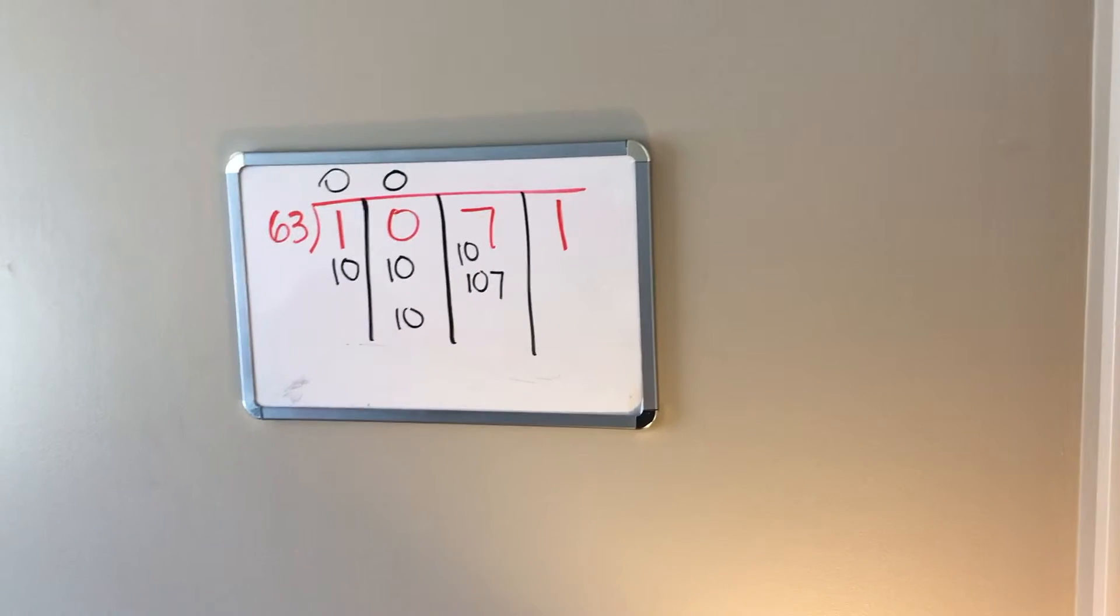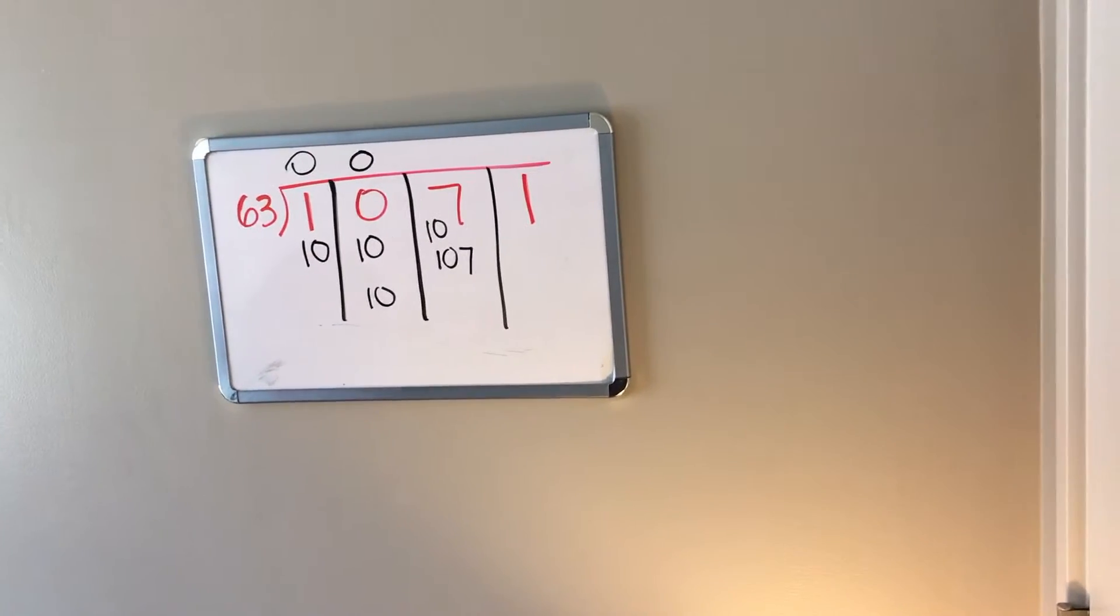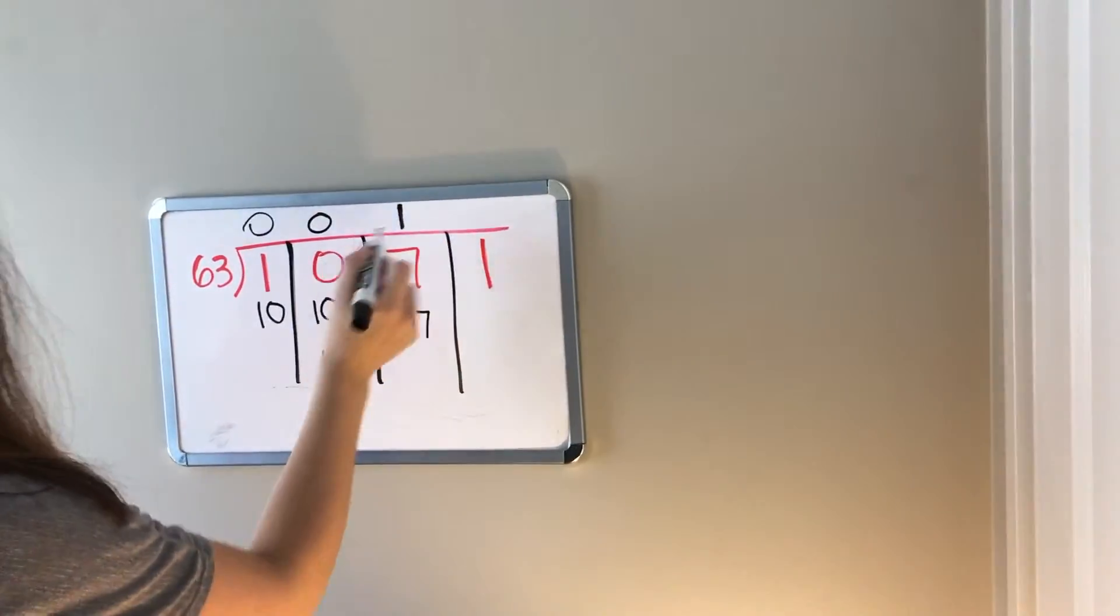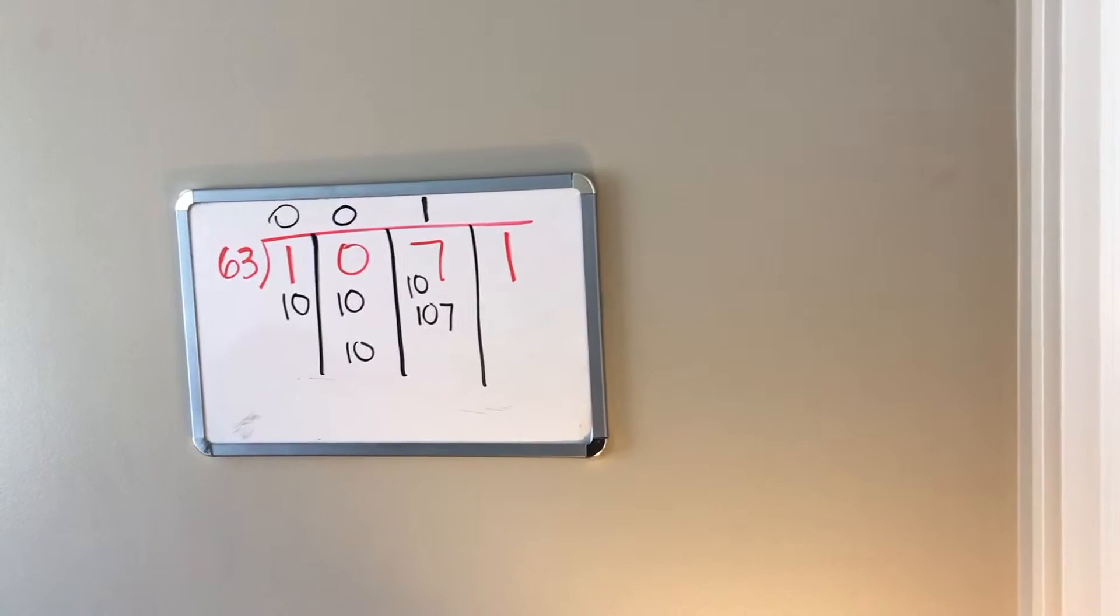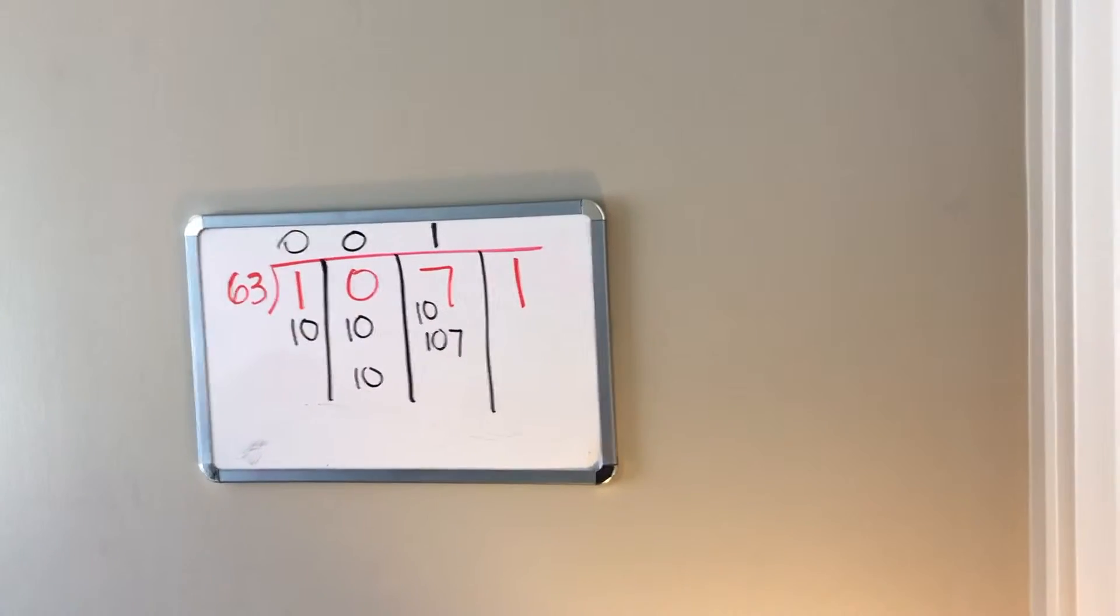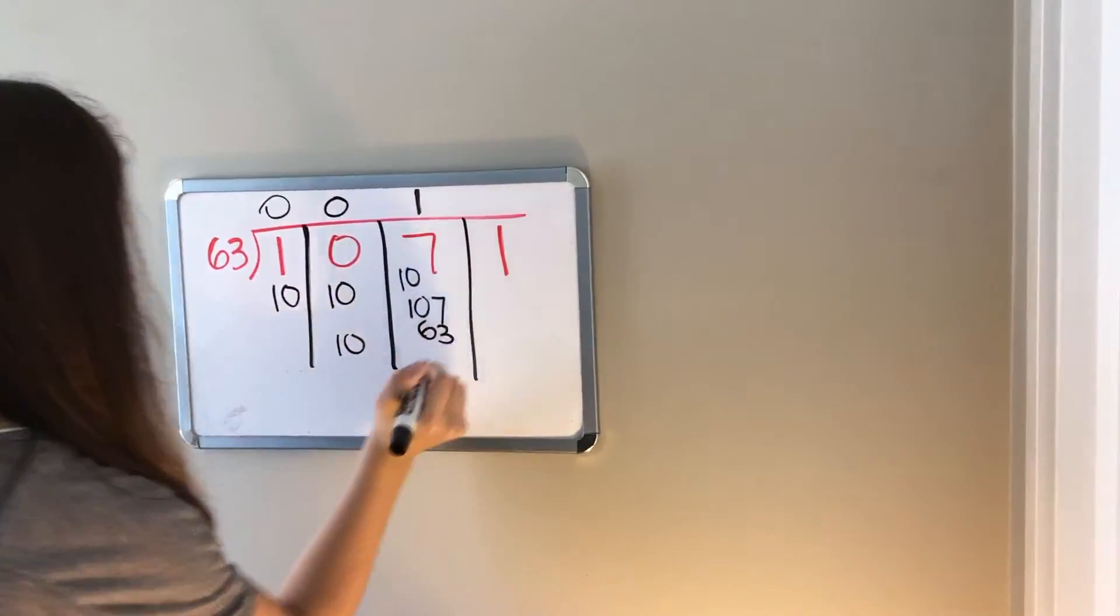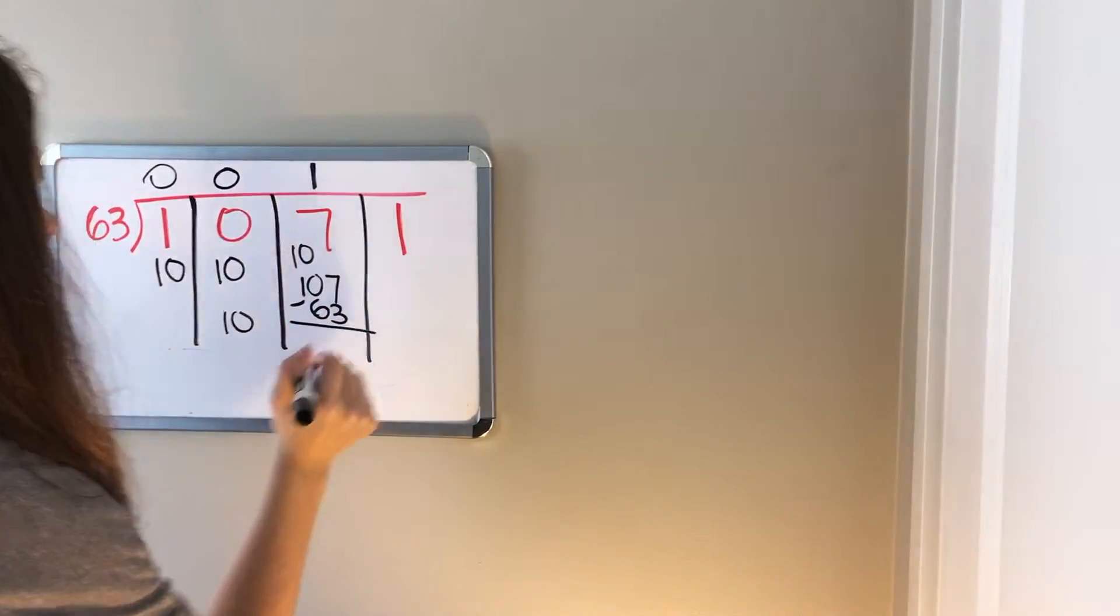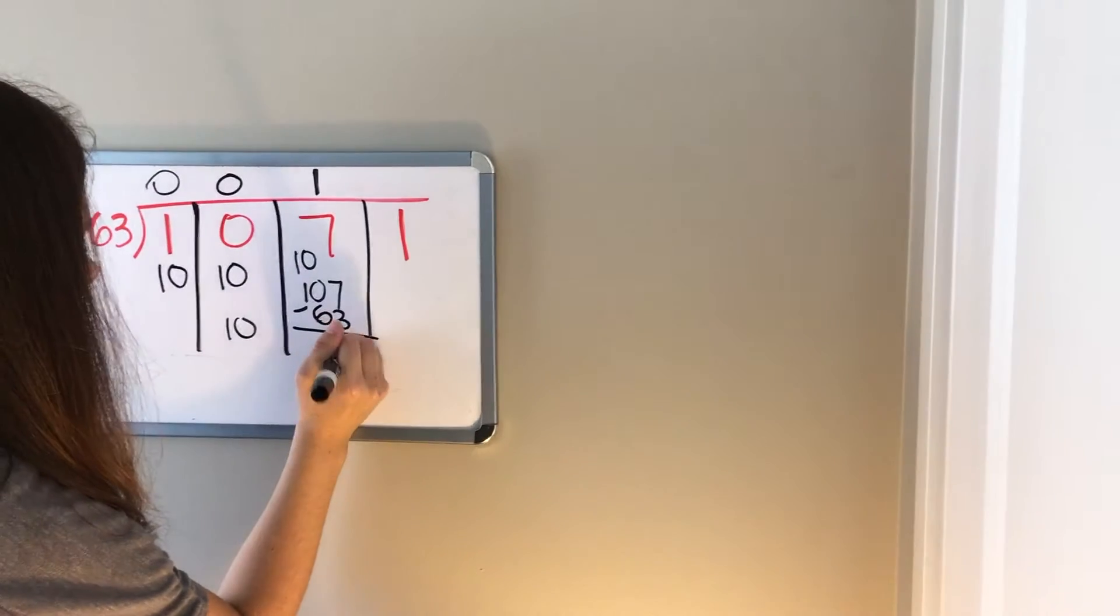So since we have 107 tens and we have 63 people, we can give each person one ten. So each person is going to get one ten. This means that we have 63 tens used up. So how many tens are left? We have 44 tens left.